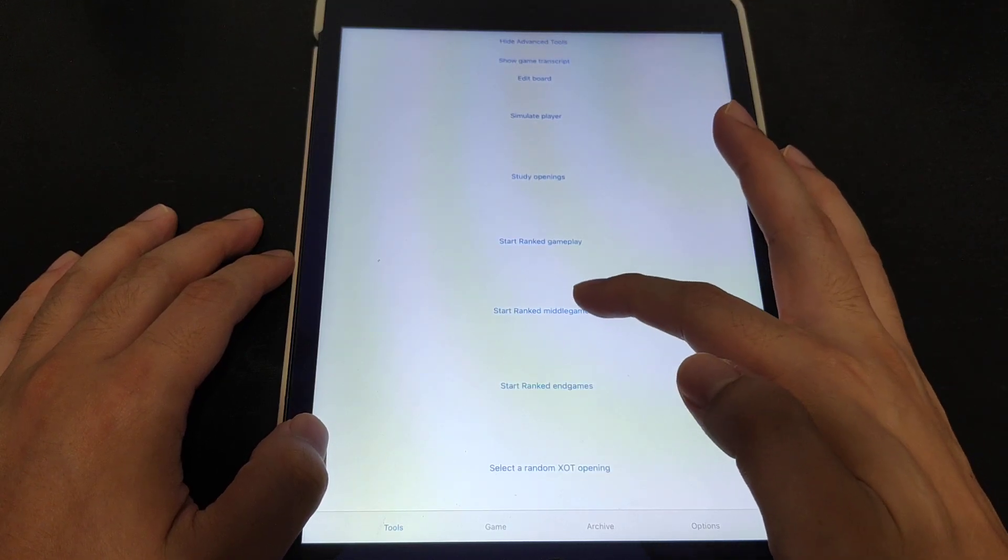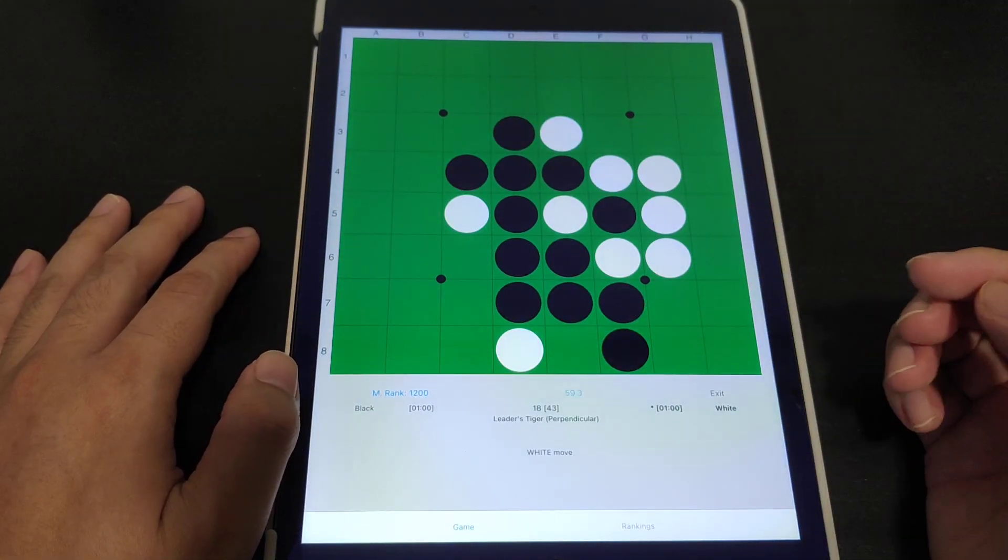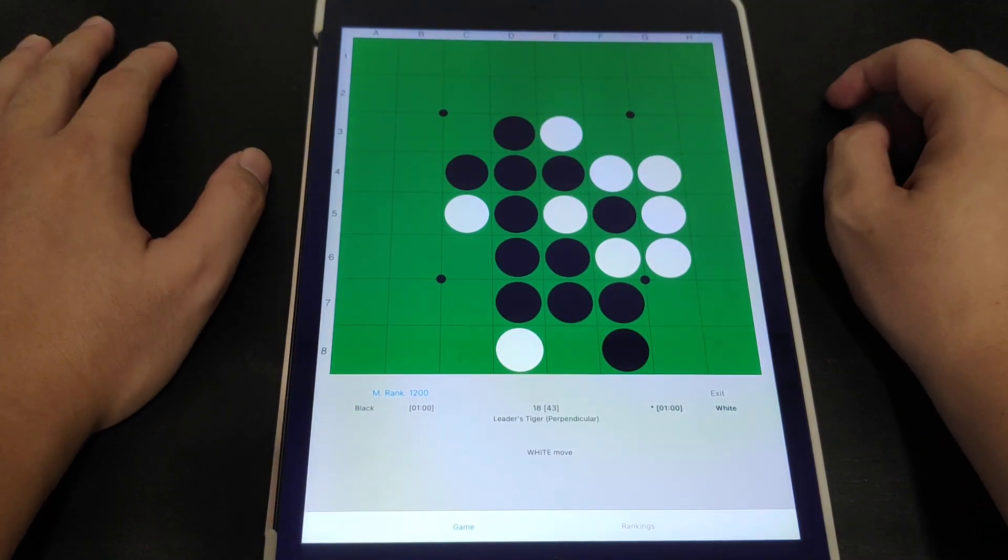We go to advanced tools and let's go to start ranked middle games. So over here this is mid game. So we start the test.